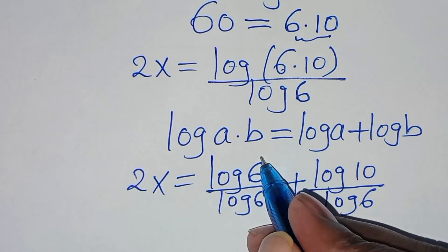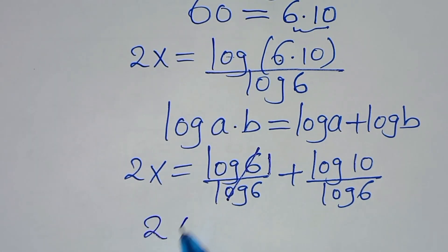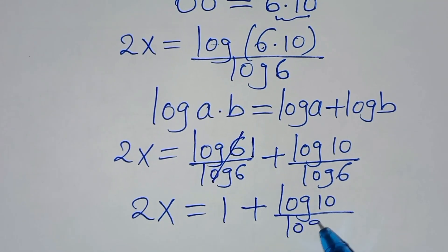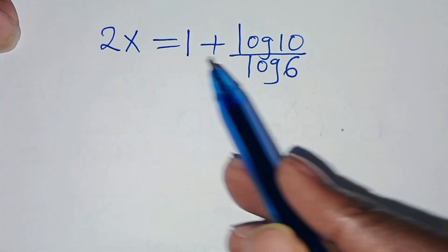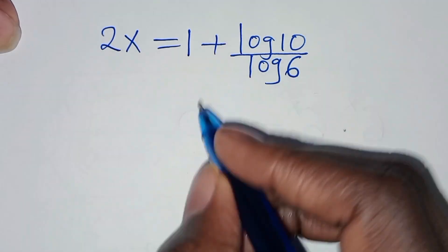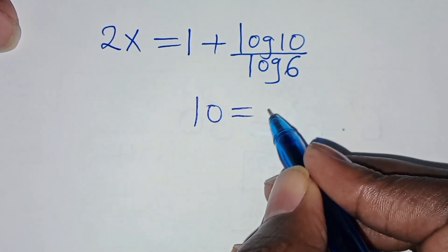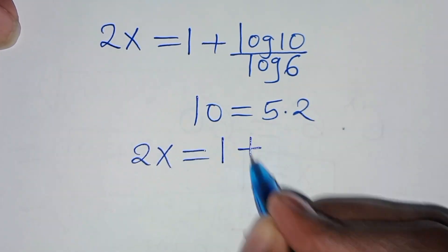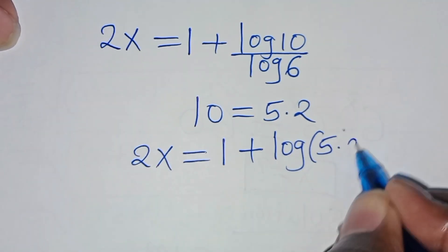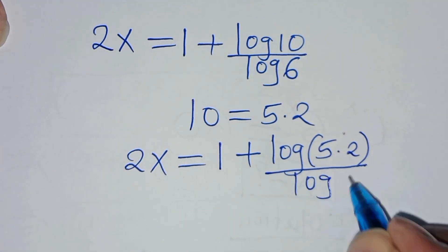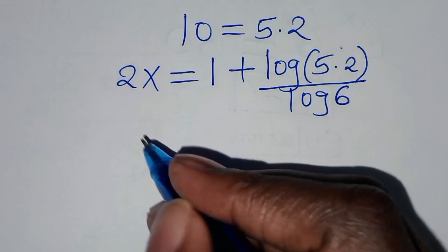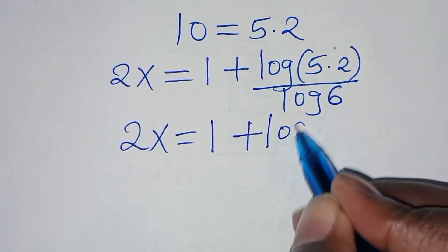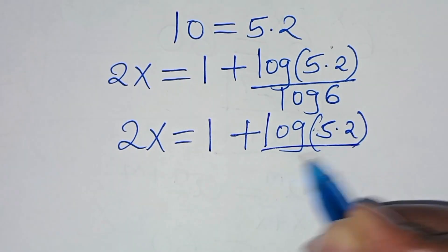Applying this logarithm property, we have 2x is equal to log 6 divided by log 6, plus log 10 divided by log 6. So log 6 and log 6 simplify to give 1. We have 2x equal to 1 plus log 10 divided by log 6. We can also express 10 as 5 times 2, so substituting this, we have 2x equal to 1 plus log of 5 times 2, divided by log 6.